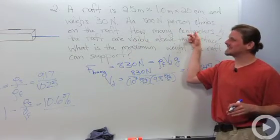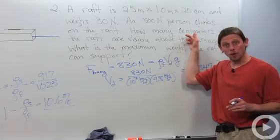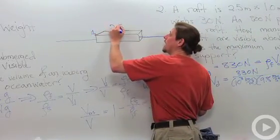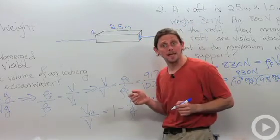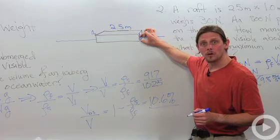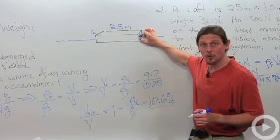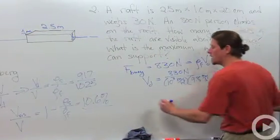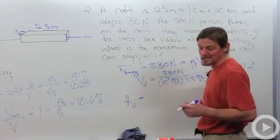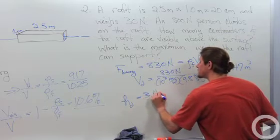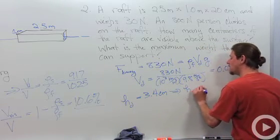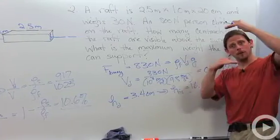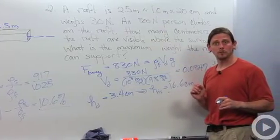We want to know how many centimeters of the raft are under the water, so we divide by the cross-sectional area. The raft is 1 meter by 2.5 meters by 20 centimeters height. Taking the volume under water and dividing by the cross-sectional area of 2.5 square meters gives the height displaced — which works out to 3.4 centimeters beneath the surface. Therefore the height visible is 20 minus 3.4, leaving 16.6 centimeters of the raft visible above the water with the 800-newton person on it.